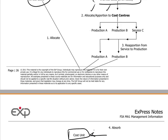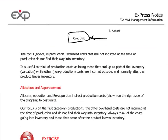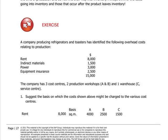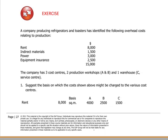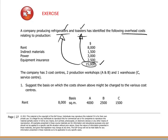The best way to appreciate that is to look at an example. So if we have a company that produces fridges and toasters, here are overhead costs relating to production: $8,000 for rent, indirect materials, power and equipment insurance adding up to $15,000. One can see here that it's not immediately obvious what part of this $15,000 should be attributed to or borne by refrigerators and how much by toasters.